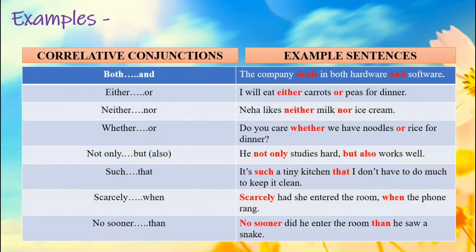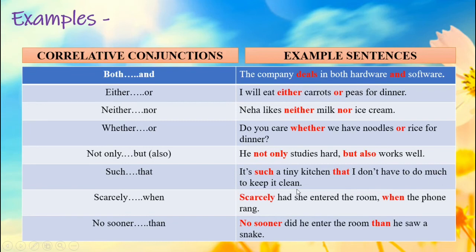Let's now see examples of correlative conjunctions in sentences. BOTH...AND: The company deals in both hardware and software. EITHER...OR: I will eat either carrots or peas for dinner. NEITHER...NOR: Neha likes neither milk nor ice cream. WHETHER...OR: Do you care whether we have noodles or rice for dinner? NOT ONLY...BUT ALSO: He not only studies hard but also works well. SUCH...THAT: It's such a tiny kitchen that I don't have to do much to keep it clean. SCARCELY...WHEN: Scarcely had she entered the room when the phone rang. NO SOONER...THAN: No sooner did he enter the room than he saw a snake.